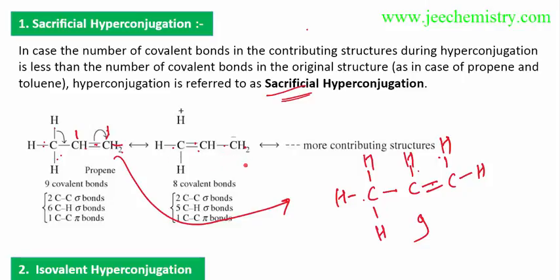This type of sacrificial hyperconjugation occurs when there is hyperconjugation in an unsaturated system — when there are double bonds or triple bonds. However, when there are free radicals or positive charges, such compounds show no sacrifice of bonds.